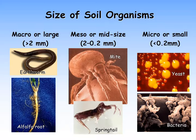Soil organisms come in a great variety of sizes. The macro or large organisms are those with a diameter greater than two millimeters — easily visible to human eyes. Examples include earthworms, plant roots, mice, snakes, beetles, and millipedes. The mesoscale organisms range in size between 2 millimeters down to 0.2 millimeters in diameter; these include springtails and smaller worms. Some of these creatures are visible to the naked eye, but many are still invisible.